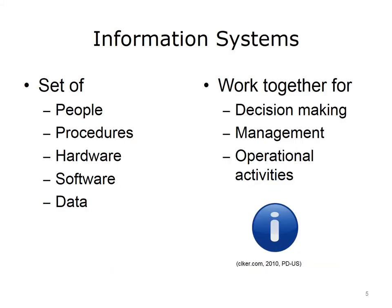An information system, or IS, is a collection of people, processes, procedures, hardware, software, and data, all working together to support decision-making, management, and operational activities. The system works together to generate information needed by the organization. It supports day-to-day information needs and long-term planning. It can be used by employees, business partners, clients, and customers of the organization.